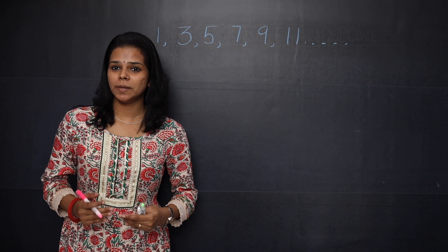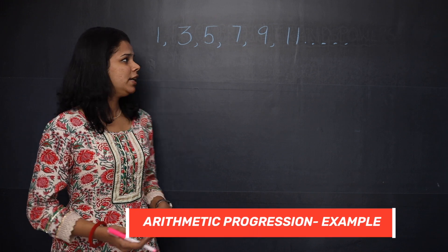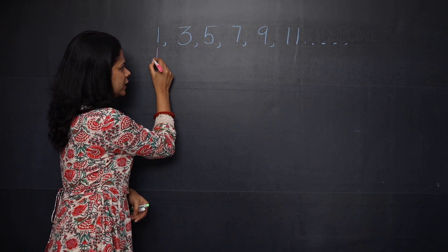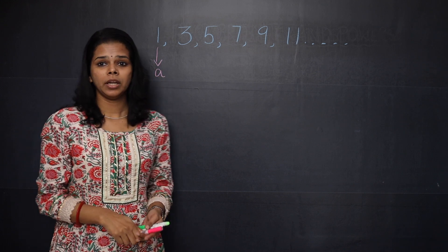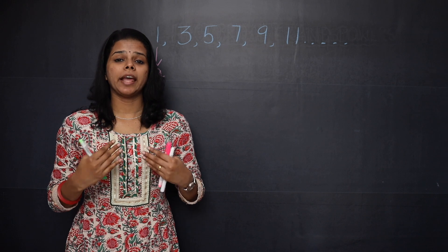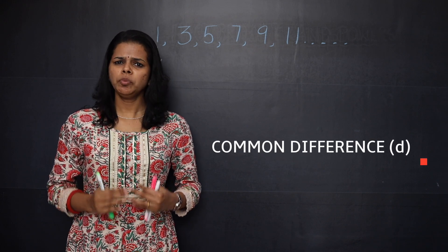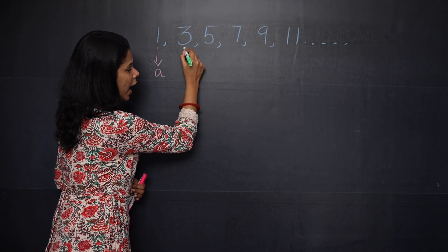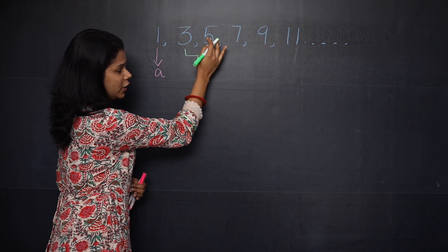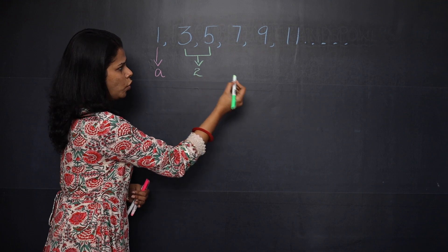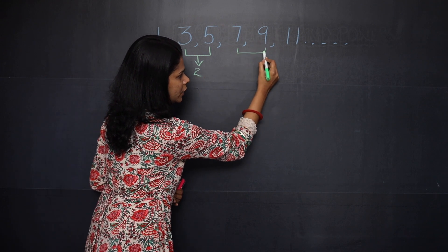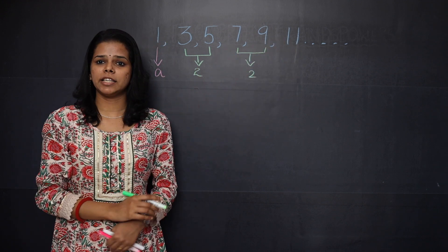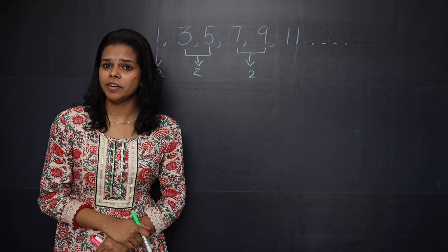To learn the basic concepts of arithmetic progression, let's see an example. Here, 1 is the first term of the sequence, so we will denote it as small letter a. Now for a sequence to be an arithmetic progression, they should have a common difference — that is, the difference between a term and its previous term. Here it is 2, so as we move on, we will get the same difference, that is 2. So this sequence has a common difference of 2.